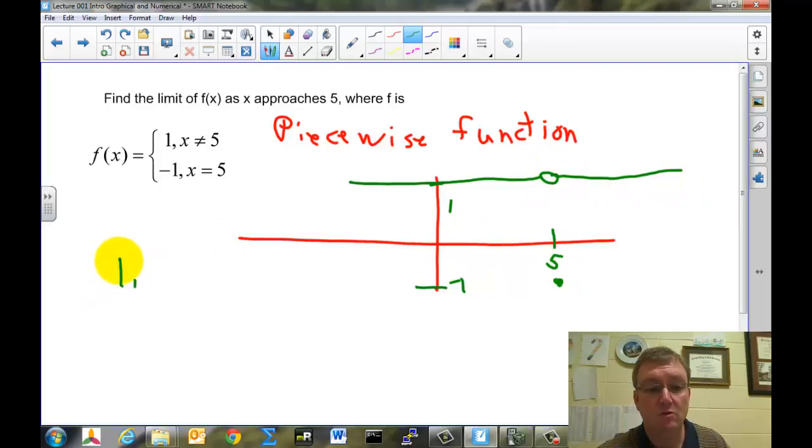Well, what's the limit as x approaches 5 of this function? If you look at the function to the right of the graph, it looks like it's approaching the number 1. From the left of the graph, it's approaching the number 1. So the limit is the number 1.